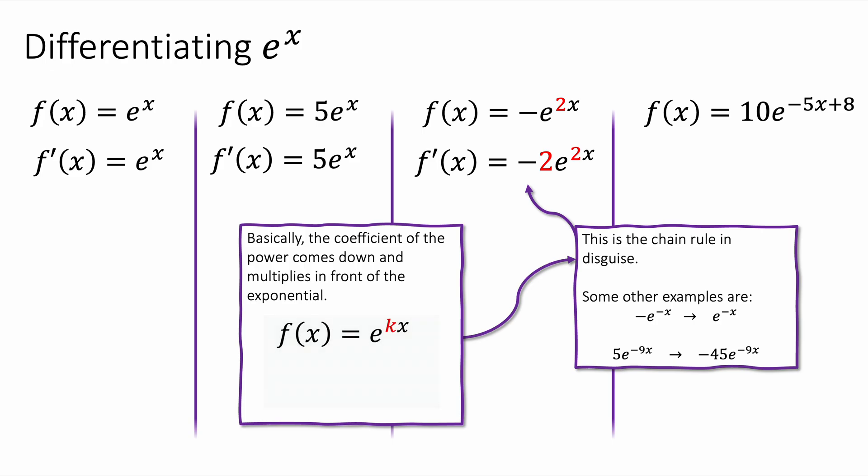I've got some other examples on the screen for you to have a look at. You might want to pause the video and get your head around the pattern. But basically the coefficient of the power comes down. So the number multiplying the x in the power comes down and it multiplies the e in front. That's the general pattern.